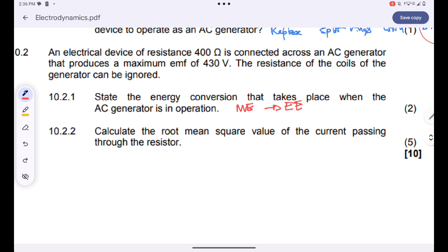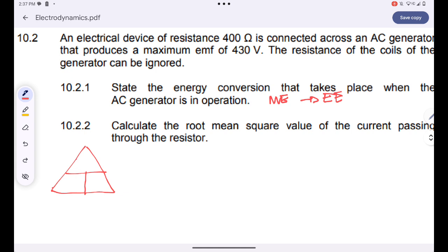Now they want us to calculate the root mean square value of the current passing through the resistor. Remember that we will simply apply Ohm's law as well. I know that V_RMS is equal to the product of I_RMS multiplied by the resistance. So V_RMS equals I_RMS times R. And hence, I_RMS will be equal to V_RMS all over the resistance.